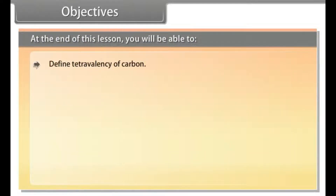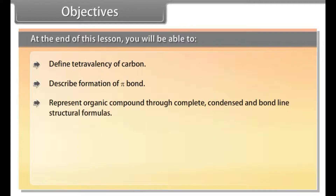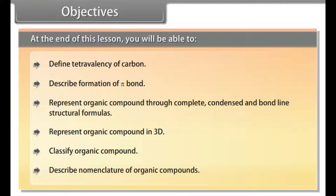At the end of this lesson, you will be able to: define tetravalency of carbon, describe formation of pi bond, represent organic compound through complete, condensed and bond line structural formulas, represent organic compound in 3D, classify organic compound, and describe nomenclature of organic compound.